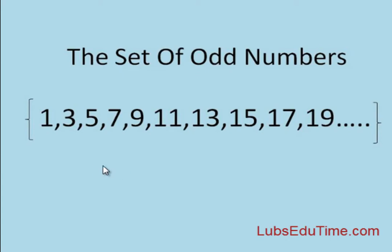The set of odd numbers consists of natural numbers that cannot be exactly divided by 2. So the set of odd numbers consists of counting numbers that are not even.